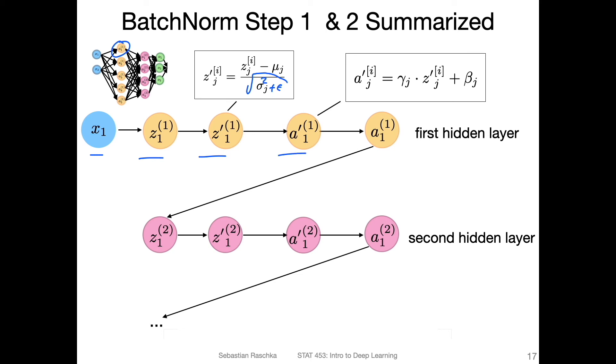So let's say x is our input, then we first compute the net input. And then this would be step one, where we standardize the net input. Then what we do is we compute this pre-activation scaling, and then we compute the activation. The activation in this case would be computed by sigma a'_1,1.